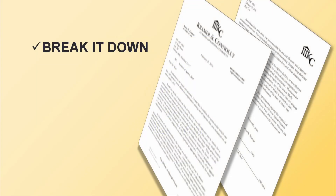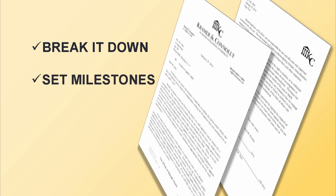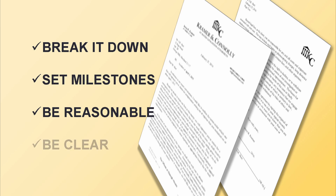These are problems that you can prevent with a well-drafted retainer agreement that breaks it down. Break that case down into stages and use those stages as milestones for payment, so that you don't have to wait until the end of the entire case to get paid and ruin your cash flow. Make sure the amount you're charging, whatever the percentage or dollar amount might be, is reasonable by the triggering event that allows you to take partial payment. And be very clear about it.